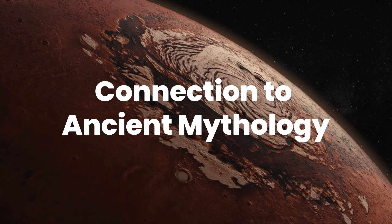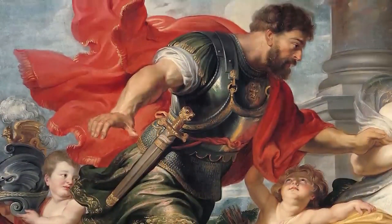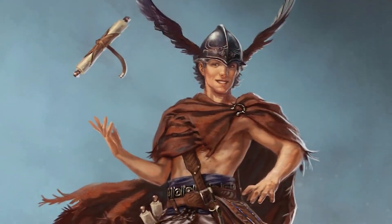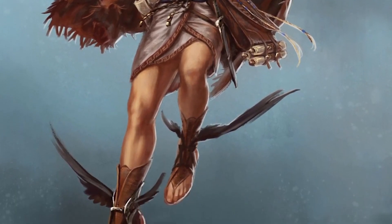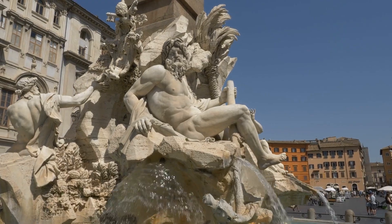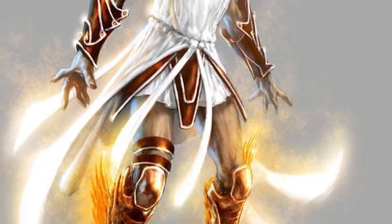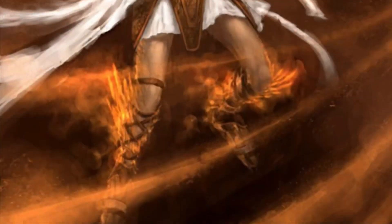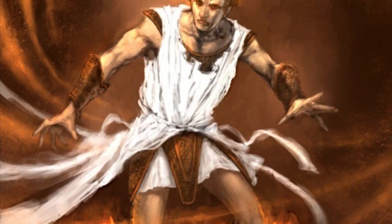Connection to ancient mythology. Mercury bears a name deeply rooted in ancient mythology. Its association with the Roman god Mercury is a fascinating testament to the way celestial bodies have influenced human culture for millennia. In Roman mythology, Mercury was known as the god of trade, communication, and travel, often depicted with a caduceus in hand, symbolizing negotiation and commerce.